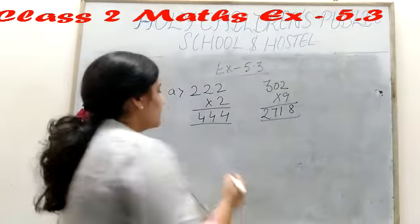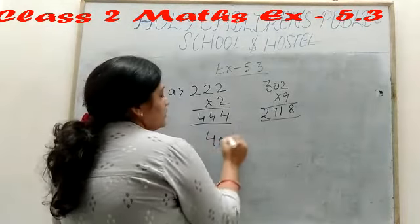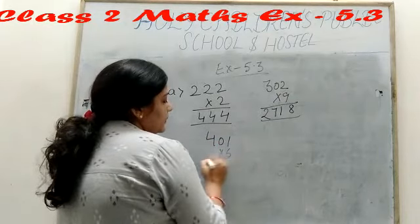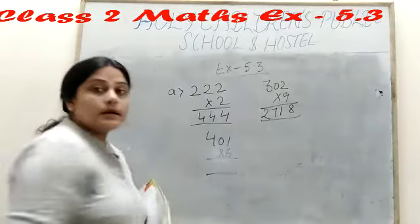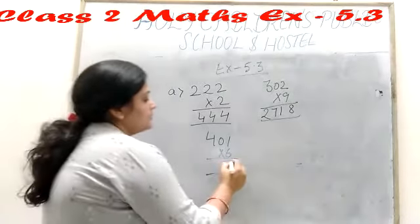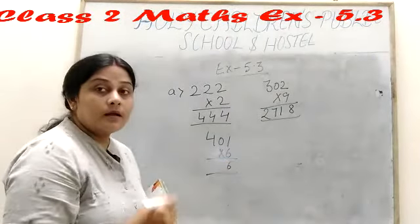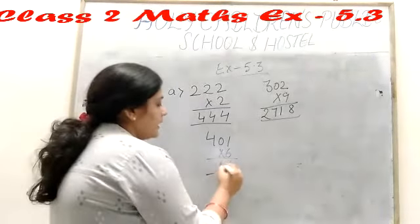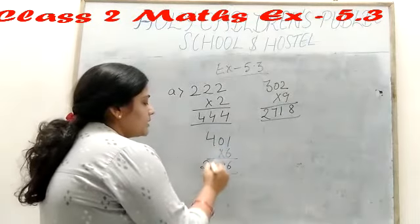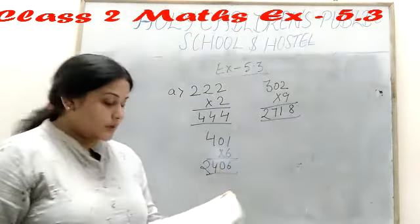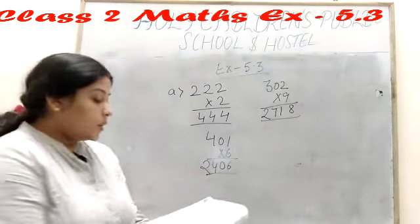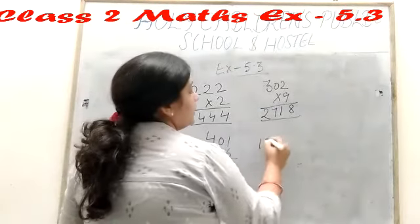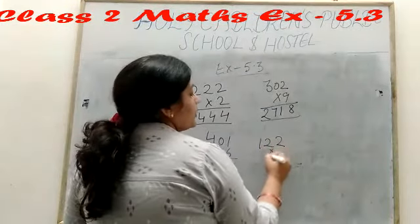Next question is 401 into 6 is equal to what? So 6.1 is 6. 0, 6 is 0. And 4, 6 is 24. Clear story. One more question.